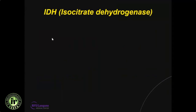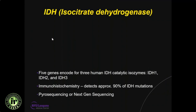So what is IDH mutation? Isocitrate dehydrogenase — five genes encoding three human IDH catalytic isozymes. The majority will have either IDH-1 or IDH-2 mutation, though some cases also have IDH-3 mutation. Most of the time, IDH mutation can be detected with immunohistochemistry, which detects about 85–90% of cases. However, for 100% accuracy, you need pyrosequencing or next-generation sequencing to really detect IDH mutation in tumor tissue.